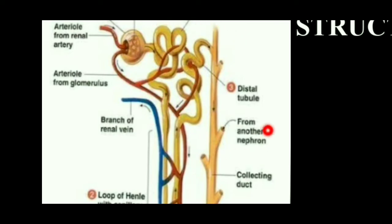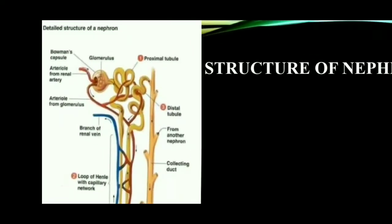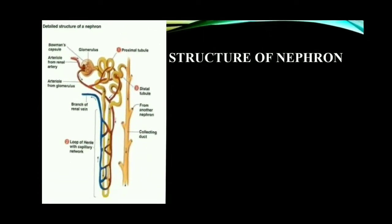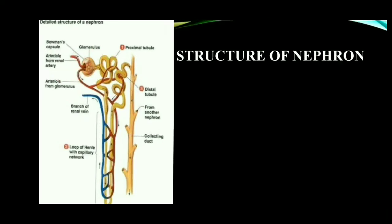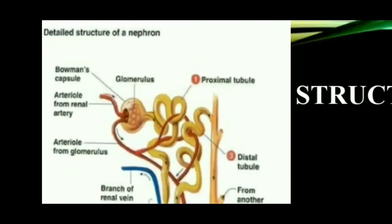What is renal corpuscle? The first part of the nephron, or the upper part of the nephron, is called renal corpuscle. It is also known as Malpighian corpuscle. This renal corpuscle again has two parts: the Bowman's capsule and glomerulus. These two collectively are called the renal corpuscle.